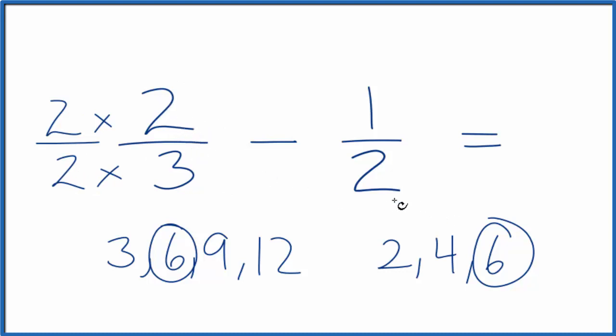Over here, to get 6 as our denominator, we can multiply 2 times 3. And again, we'll put 3 over 3.